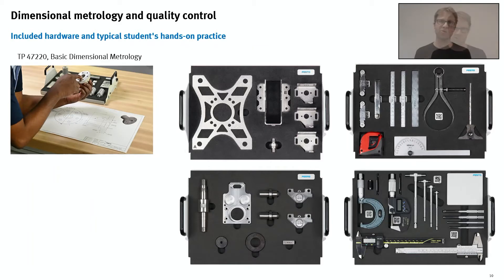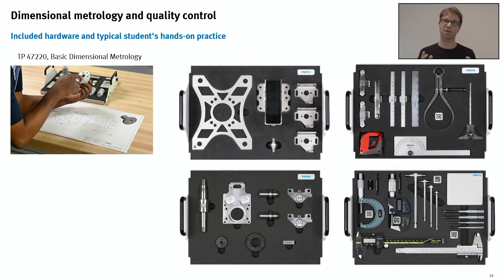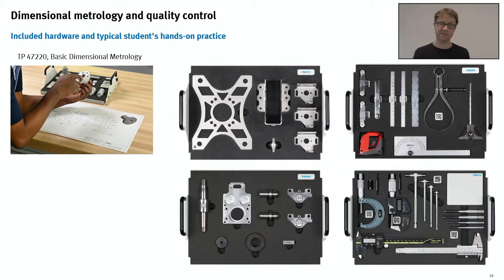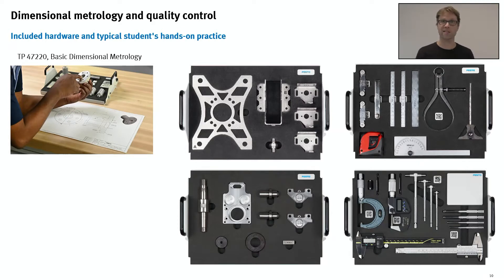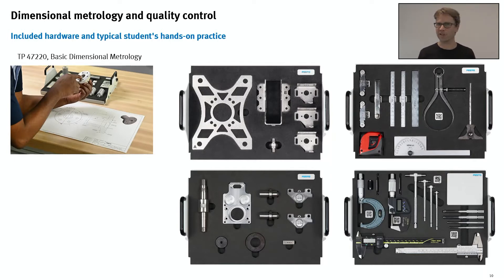We've made sure these are truly turnkey solutions. You will find all the hardware, all the parts, and all the measuring tools you need in a single package. The parts have been especially manufactured here at Festo to ensure students are exposed to the challenges of using measuring instruments and have multiple opportunities to take measurements. The tools supplied with the Basic Dimensional Metrology package include rules, protractors, tape measures, micrometers, calipers, small hole gauges, telescoping gauges, and more.